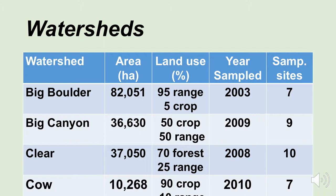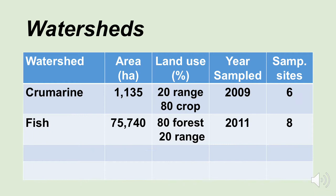Again, there are 15 watersheds used as part of this study. The Crew Marine watershed is very small — only 1,100 hectares — and it was primarily a crop watershed: 80% cropland, 20% rangeland. The year it was sampled was 2009, and there were six sampling sites within this watershed.